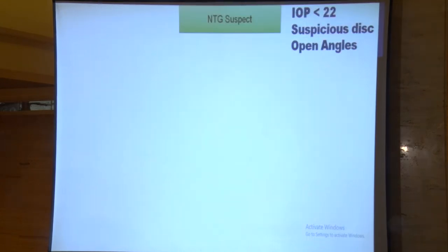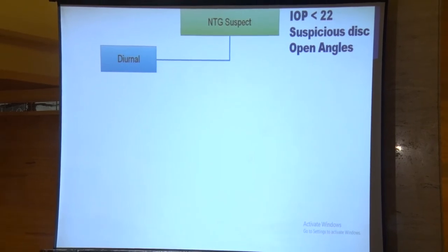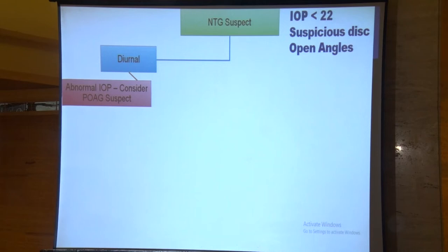For individuals who are NTG suspects — where intraocular pressure is less than 22 but we are suspecting based on disc examination — we should perform diurnal variation testing. If during the diurnal assessment there is a rise or higher intraocular pressure, we must treat these patients as open-angle glaucoma patients.